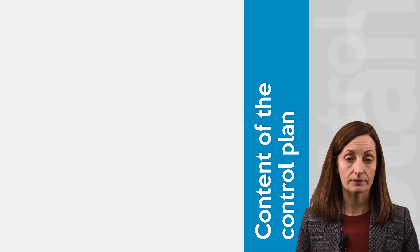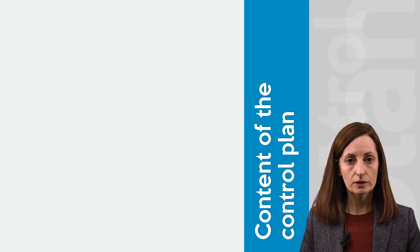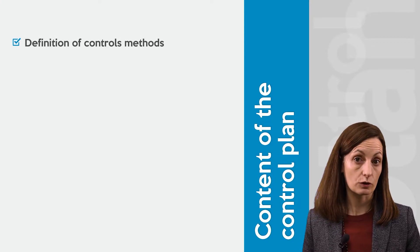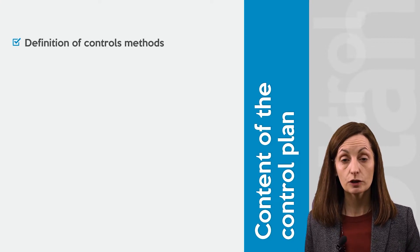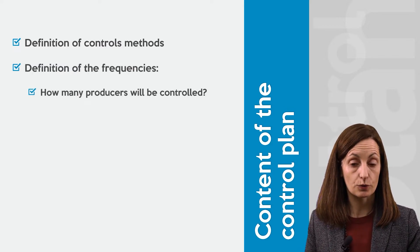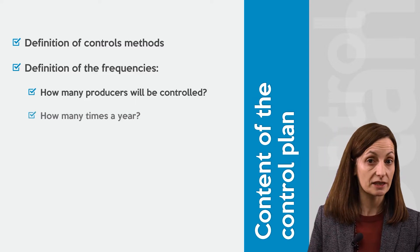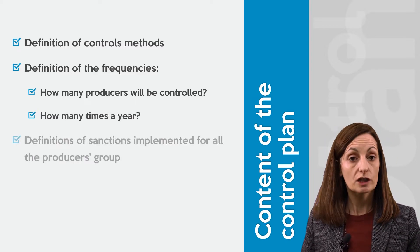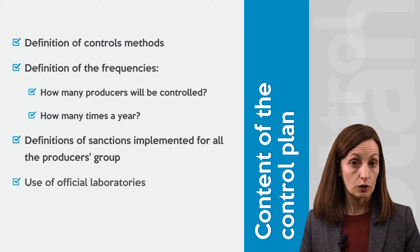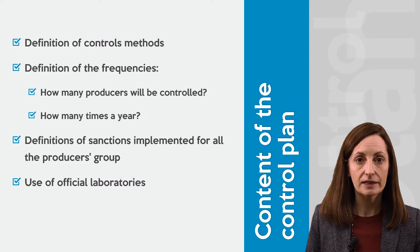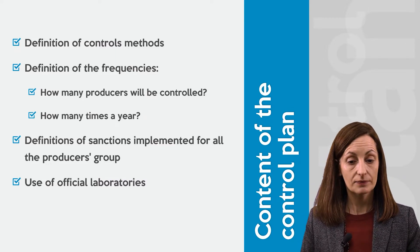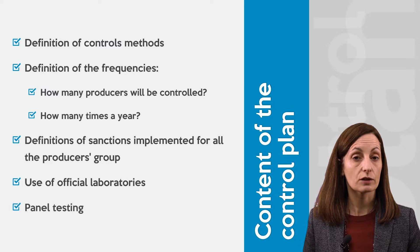The content of the control plan requires integrating different aspects. First of all, you need to define the control methods, then define the frequencies of the controls — how many producers will be controlled and how many times a year. You need to define also the sanctions implemented for all the producers group. You need to mention, if any, the use of official laboratories and whether they need to be accredited. You can also define the panel testing.